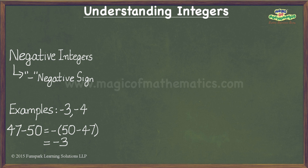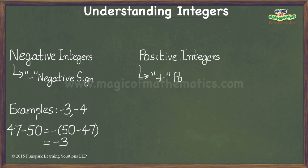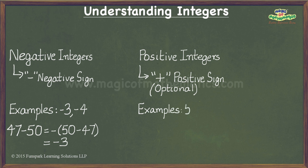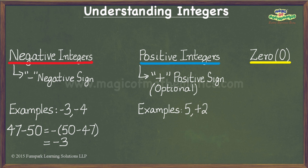Before we discovered negative integers, we already had natural numbers. We also call these natural numbers as positive integers, and we represent such numbers by prefixing the plus symbol — which we call the positive sign — though the positive sign is optional. What this means is that even if the positive sign is not prefixed to a natural number, it qualifies to be called a positive integer. Some examples of positive integers are 5 and positive 2. Collectively, positive integers, negative integers, and 0 are called integers.